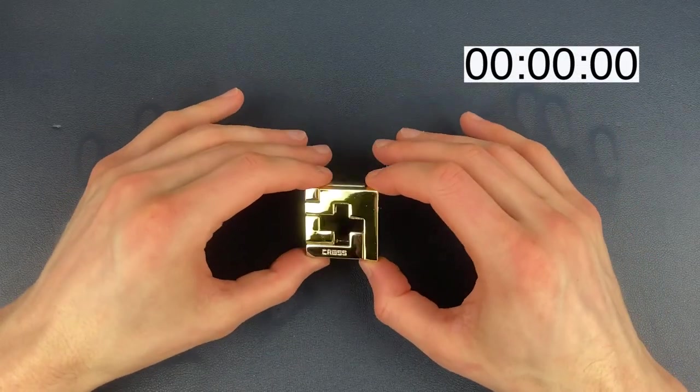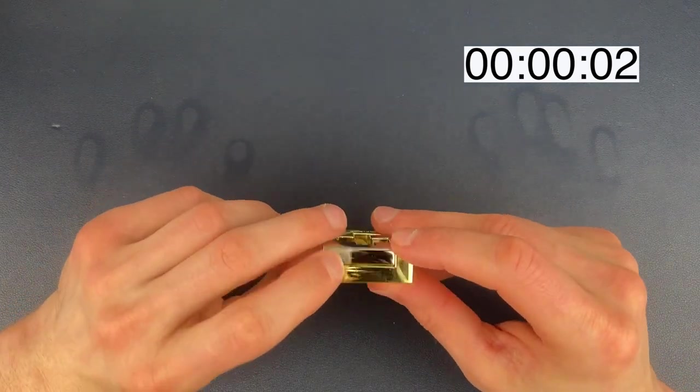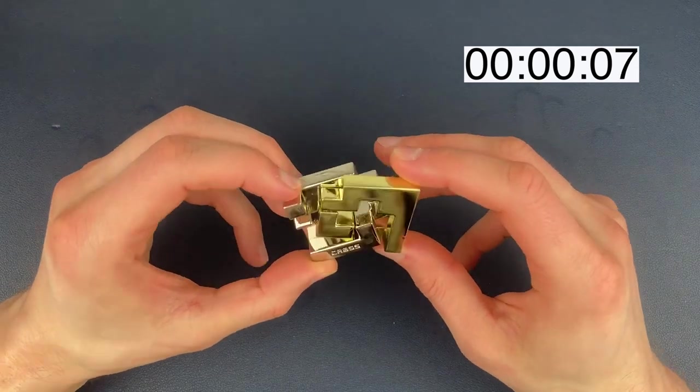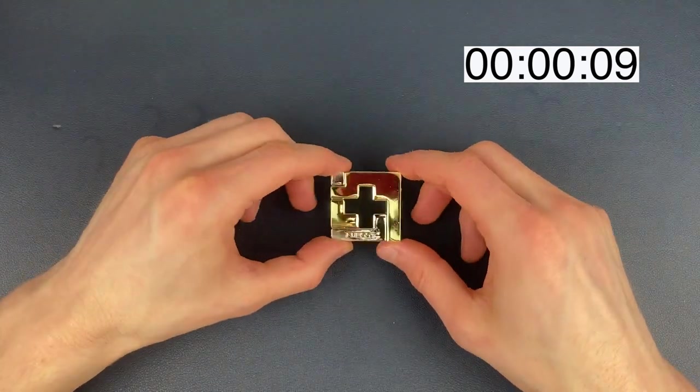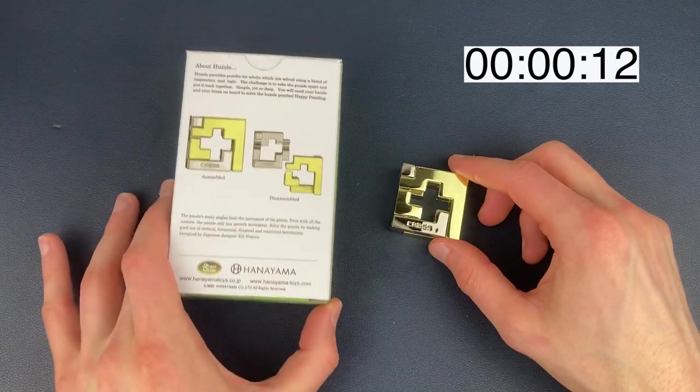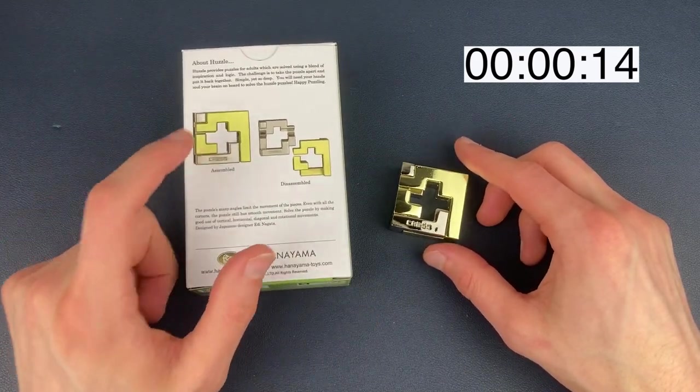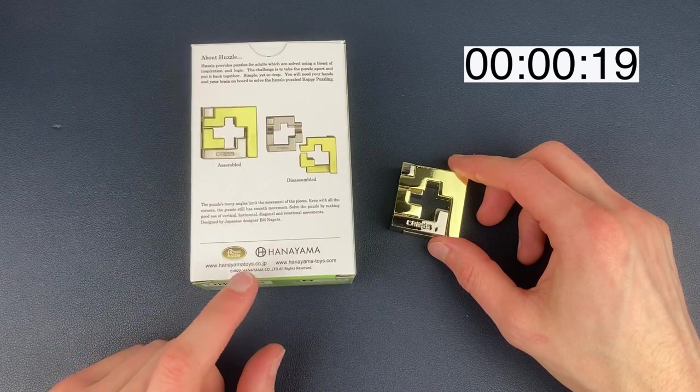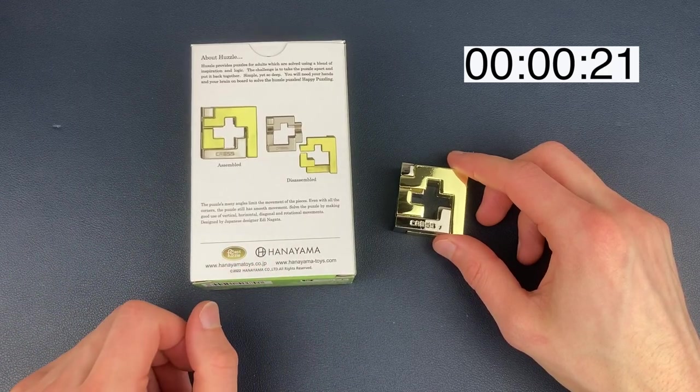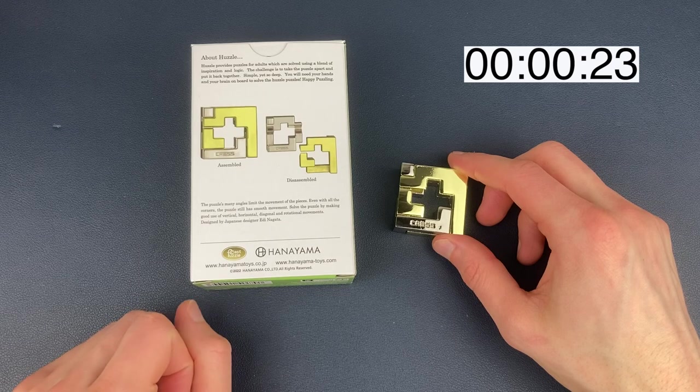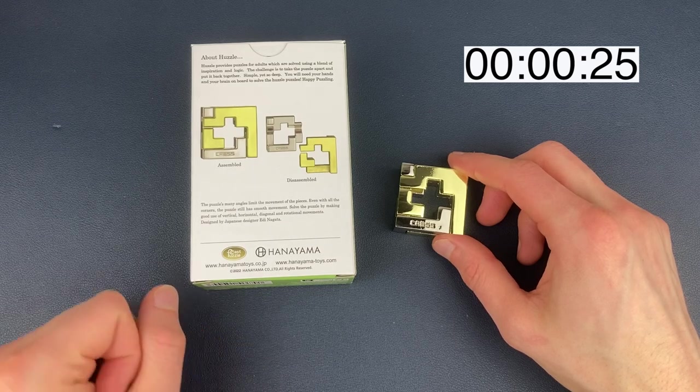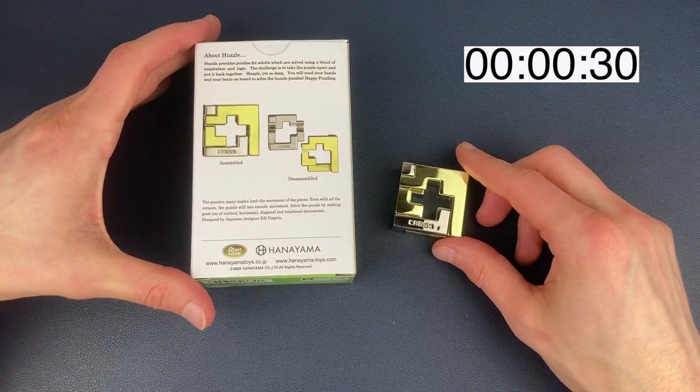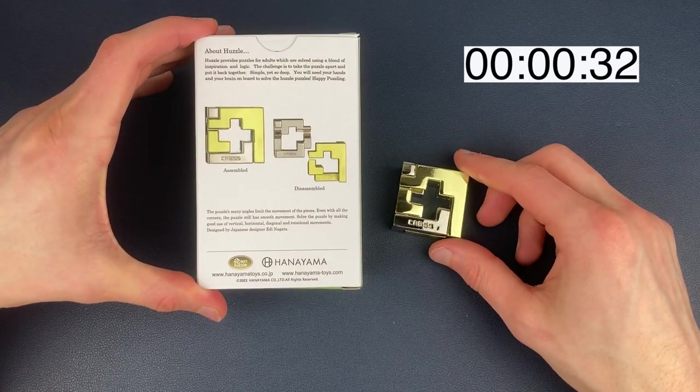Okay, so here is the cross puzzle and it's made up of two pieces, a gold piece and a silver piece. And there we go, we've got the first move sorted. Before we start on with it, we'll have a quick look at the box. Obviously, this is how it is now, this is what we're aiming for. And here it says, the puzzle's many angles limit the movement of the pieces. Even with all the corners, the puzzle still has smooth movement. Solve the puzzle by making good use of vertical, horizontal, diagonal, and rotational movements.